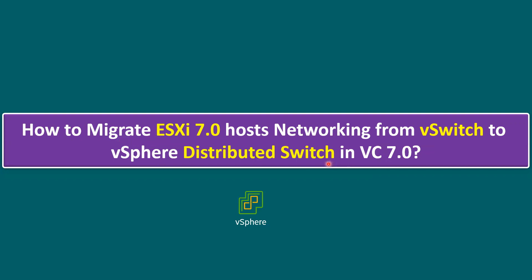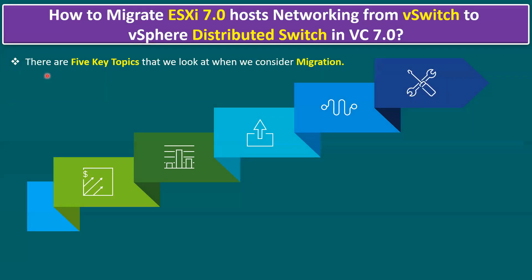To perform this migration from vSwitch to dvSwitch, it generally includes five key steps. The first step is to create a VDS — we have to create a distributed switch. As we are aware, the distributed switch feature is available only at the vCenter level, not on the ESXi host level. So first we log into vCenter and create a distributed switch.